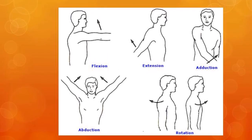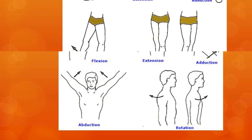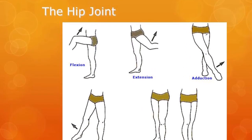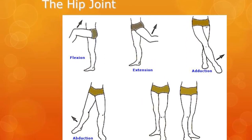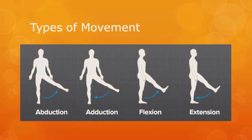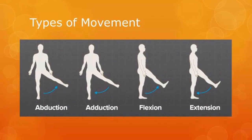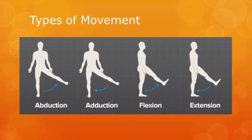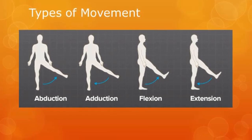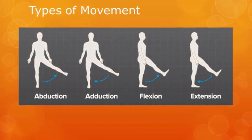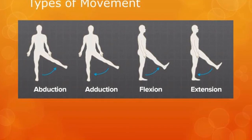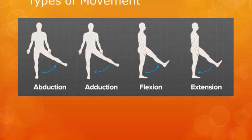Take note of the types of movement available at the shoulder and hip, so your sporting examples are correct. To summarise: at a hinge joint you have flexion and extension, and at a ball and socket joint you have all five movements — flexion, extension, adduction, abduction, and rotation.